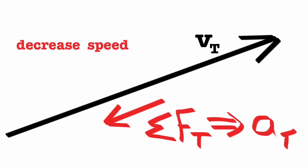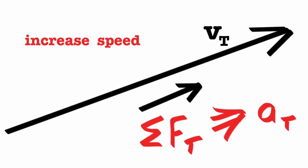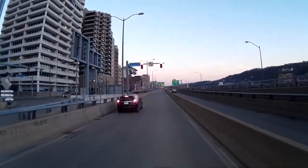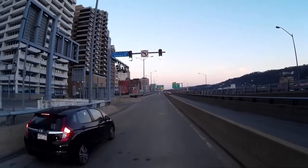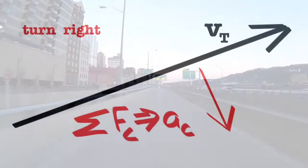So your tangential velocity is that speedometer reading with the direction. If you're slowing down, the tangential net force causing the slowing is backward. If you're speeding up, that tangential net force is forward causing the tangential acceleration. Tangential net force is backward causing a tangential acceleration slowing down. Now it turns green — tangential net force is forward causing the tangential acceleration forward.